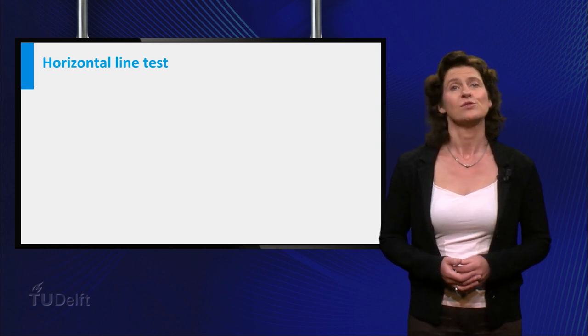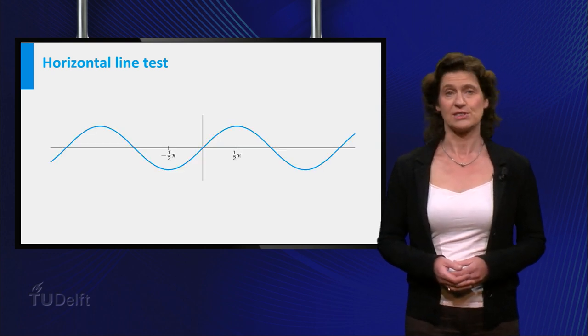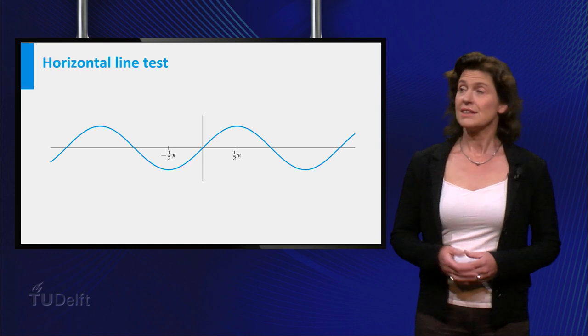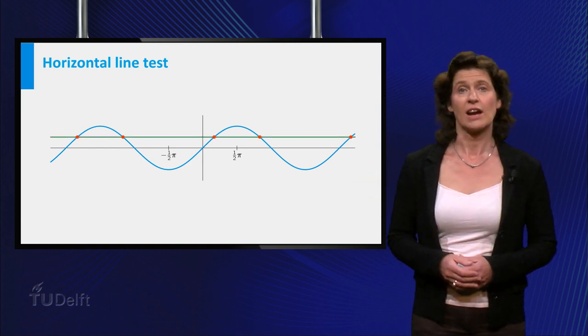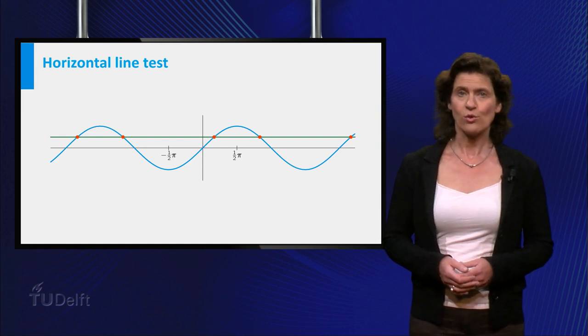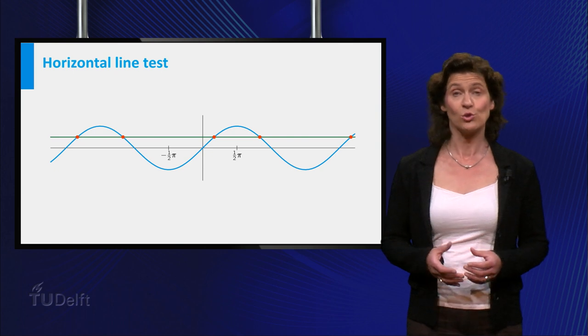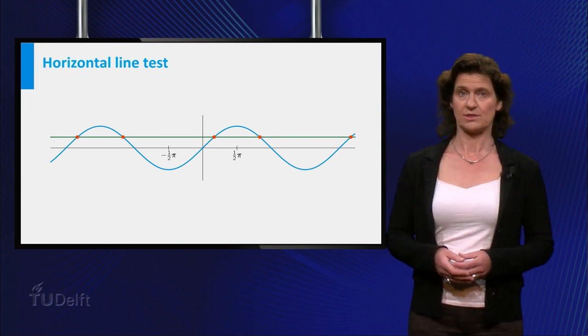Let's first find the inverse function of the sine. Take a look at the graph of the sine function. This horizontal line hits the graph in more than one point. So what you can do now is to restrict the domain of the function in such a way that on this new domain, it only hits the horizontal line once.